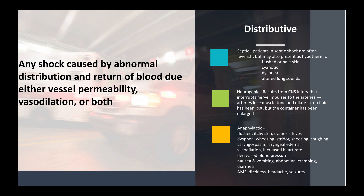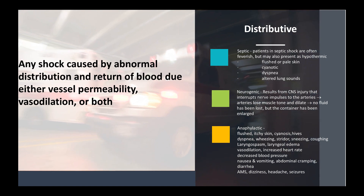Distributive shock is caused by an abnormal distribution and return of blood because of vessel permeability or dilation — that significant vasodilation. Septic shock falls here. These patients can often be feverish. They're not going to be the cool pale diaphoretic presentation, so keep in mind these different presentations. They can be flushed, feverish, have pale or cyanotic skin, difficulty breathing, and altered lung sounds. Think things like pneumonia.